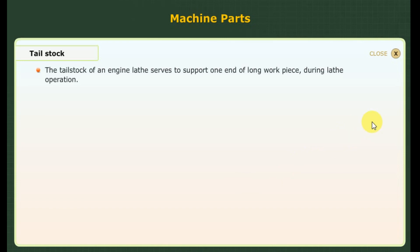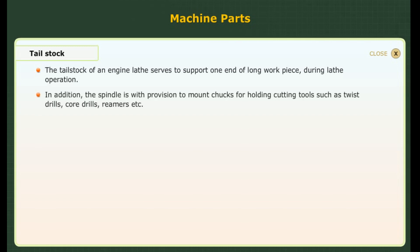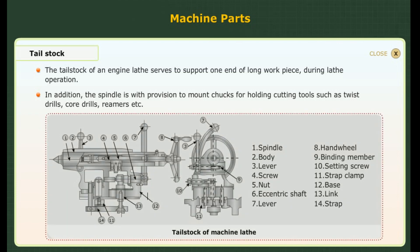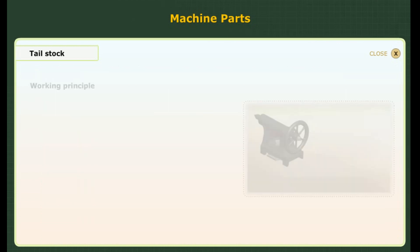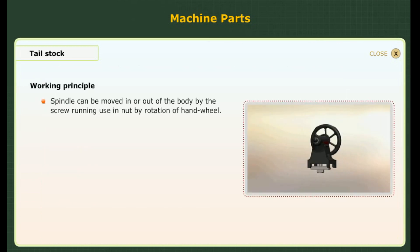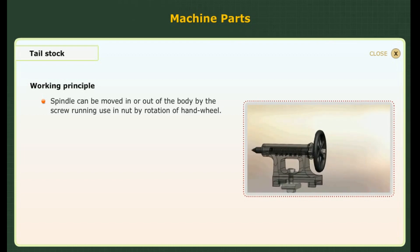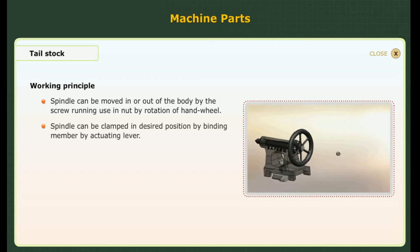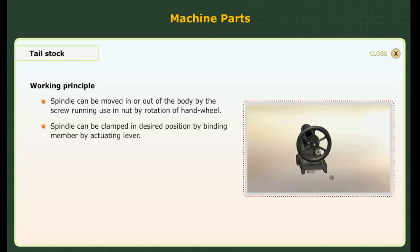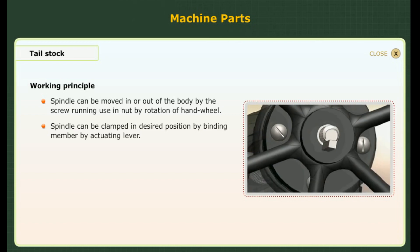Tail stock. The tail stock of an engine lathe serves to support one end of a long workpiece during lathe operation. In addition, the spindle has a provision to mount chucks for holding cutting tools such as twist drills, core drills, reamers, etc. Working principle: the spindle can be moved in or out of the body by the screw running in a nut by rotation of the hand-wheel. The spindle can be clamped in the desired position by a binding member by actuating a lever.